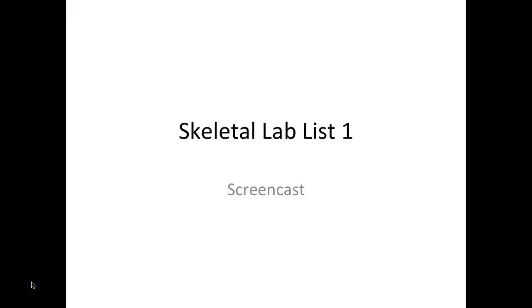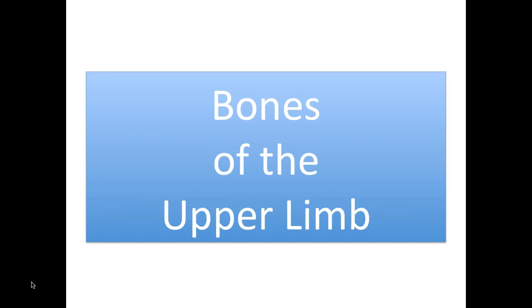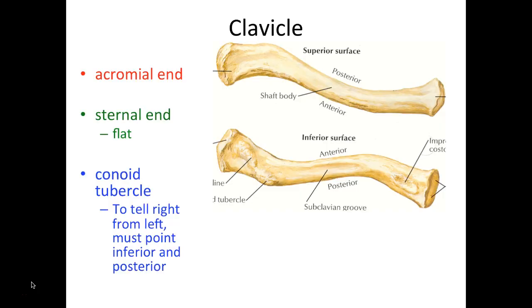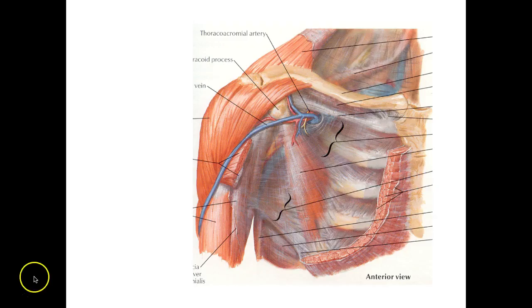Hello and welcome to your first skeletal lab list lecture. We're going to go through the bones of the upper limb, so use the handout posted on Blackboard and handed out in class to follow along. We'll start by describing the pectoral girdle, which is made up of the clavicle along with the scapula, found more towards the posterior portion of the body.